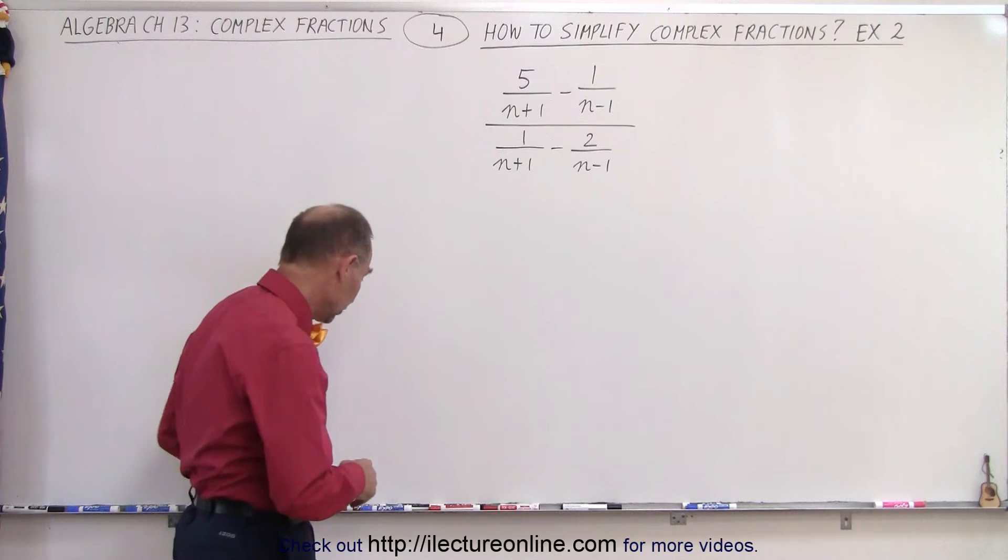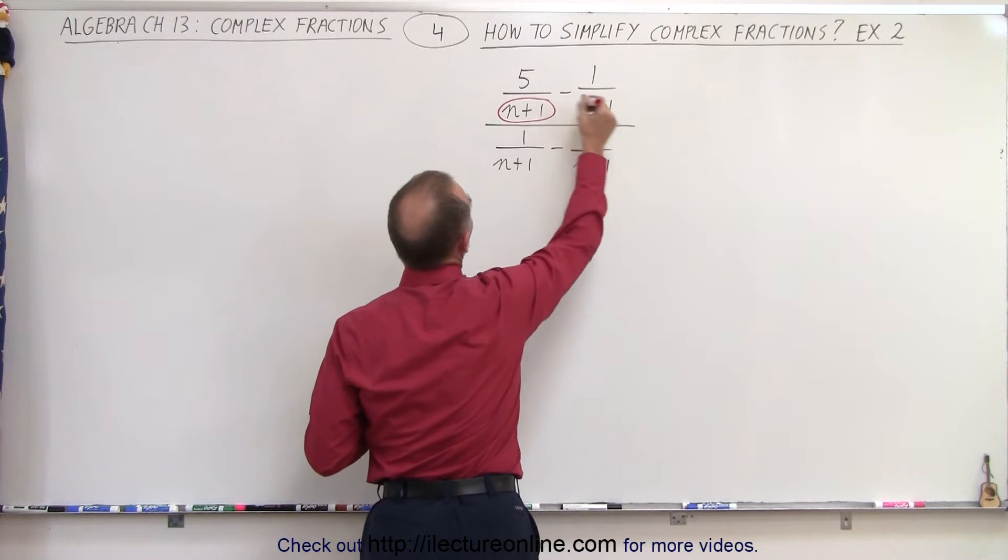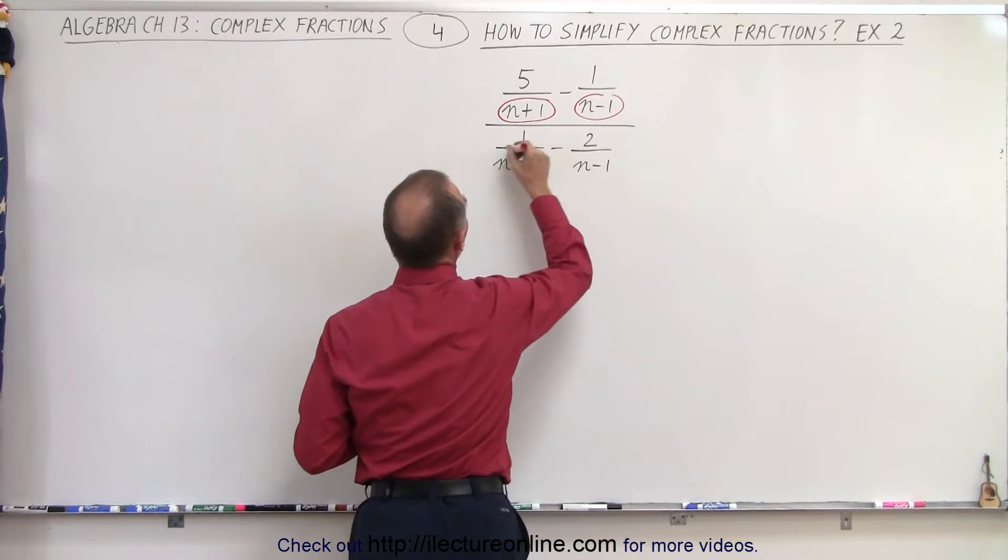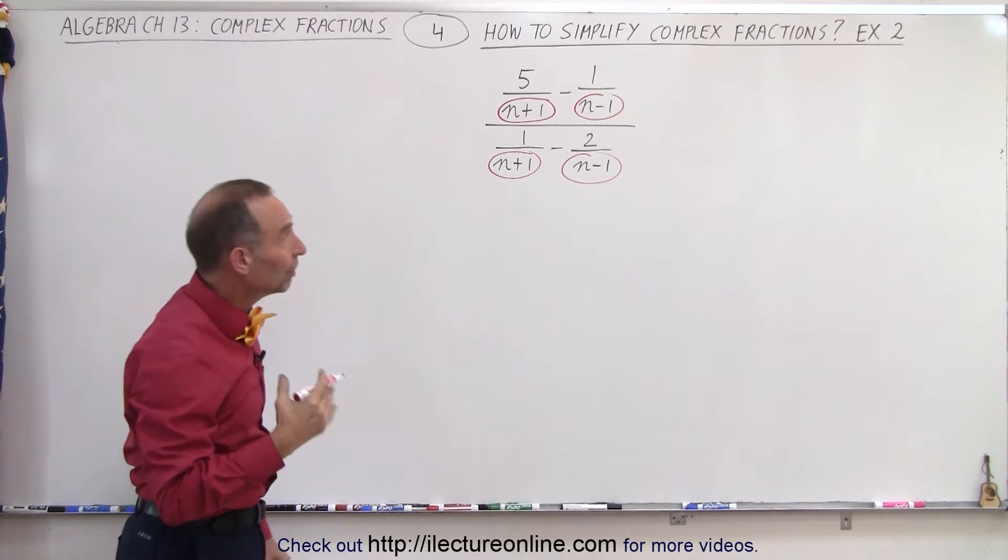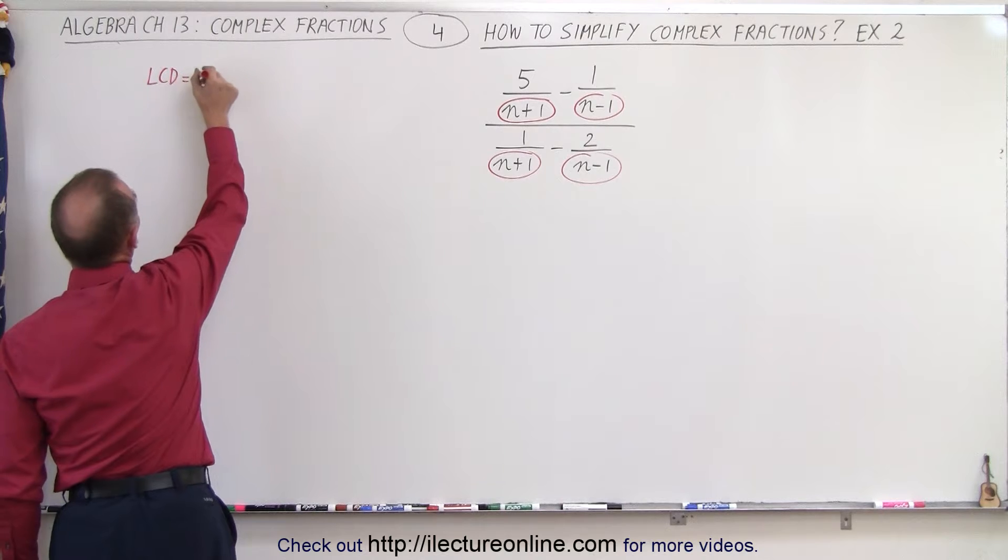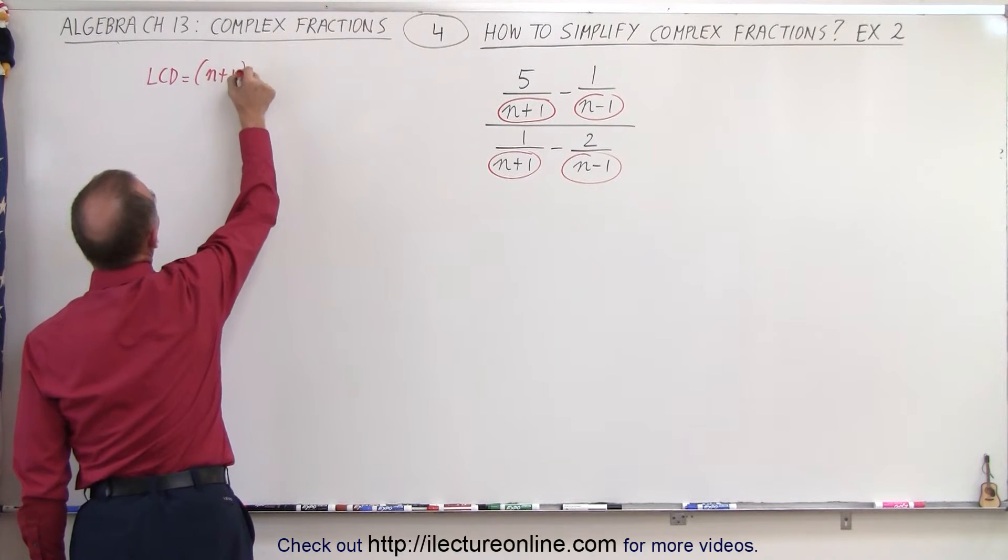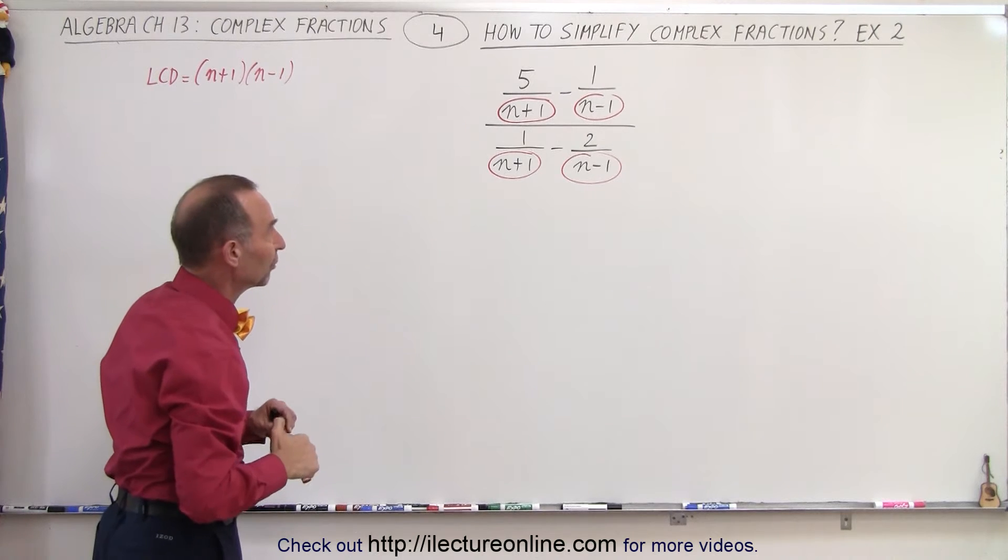Well, first of all, what you need to do is recognize all the denominators. We have an n plus 1, an n minus 1, n plus 1, n minus 1. So you can see there's clearly two different denominators, which means that the LCD is equal to n plus 1 times n minus 1, the product of the two individual denominators.